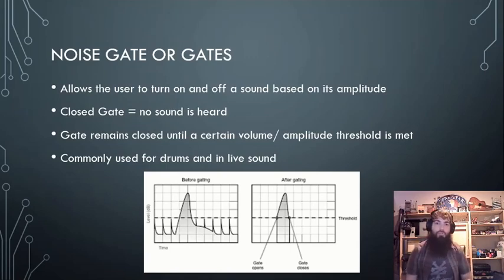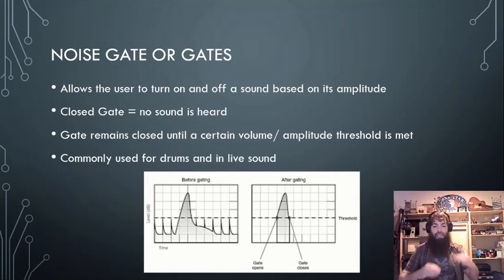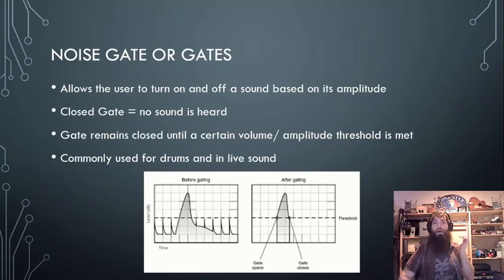An alternative to compressors is what we call noise gates, or just gates. These allow a user to turn a signal on and off based on its amplitude, meaning it increases the dynamic range — the loud parts stay loud while the soft parts can be turned down or go to off based on the parameter choices.